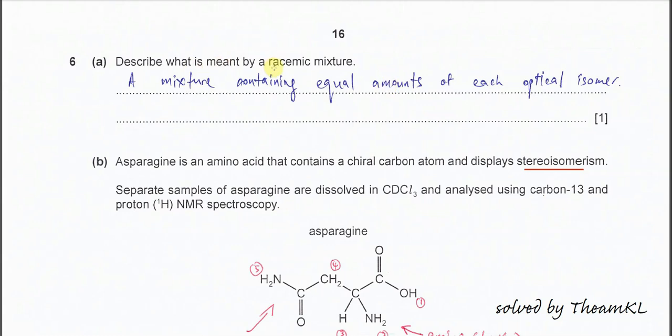Question 6a: Describe what is meant by racemic mixture. A mixture containing equal amounts of each optical isomer. So what is optical isomer? Optical isomers are mirror images which are non-superimposable.